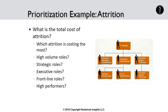Let's take attrition as a topic for project prioritization. If you were to run a project and determine the total cost of your attrition, you could then start slicing and dicing your data to find which portion of attrition is actually costing the company the most money. Does that attrition mostly come from high-volume roles, strategic roles, or is it at the executive level? Doing this type of analysis allows you to prioritize which pieces of that attrition you will try to address first.